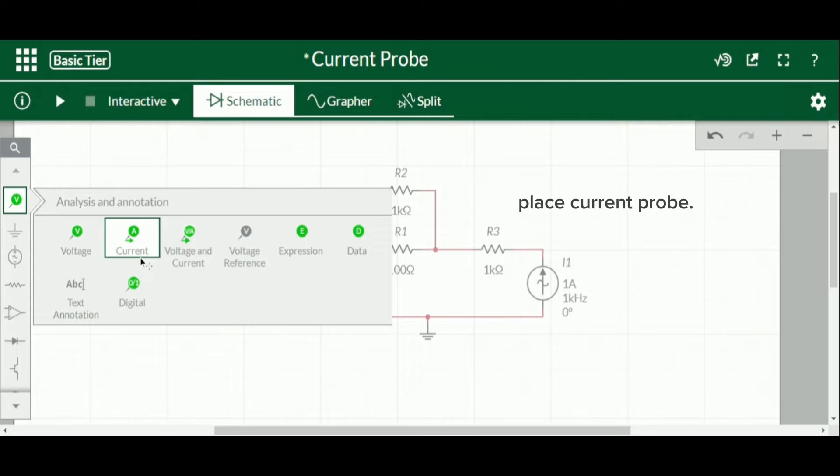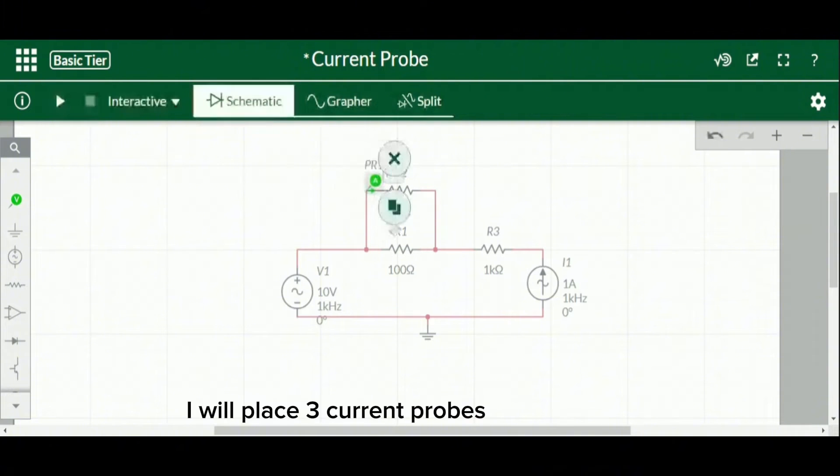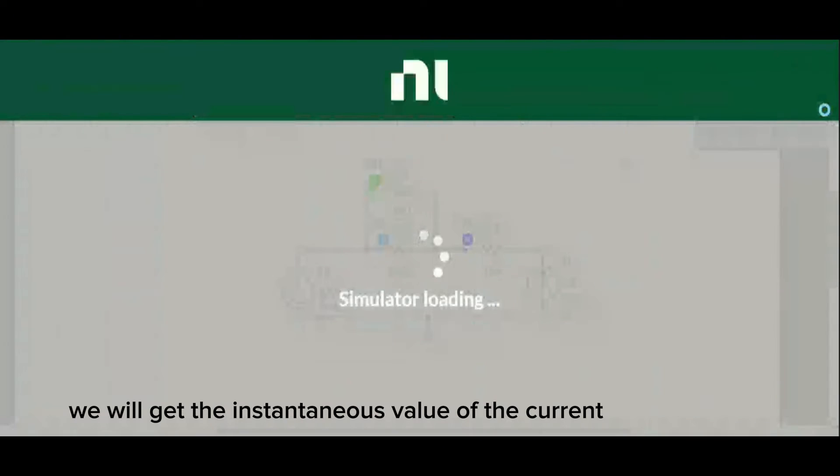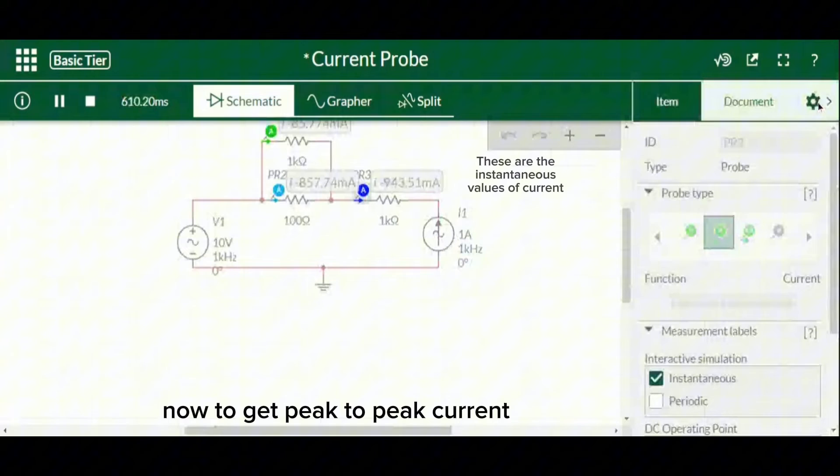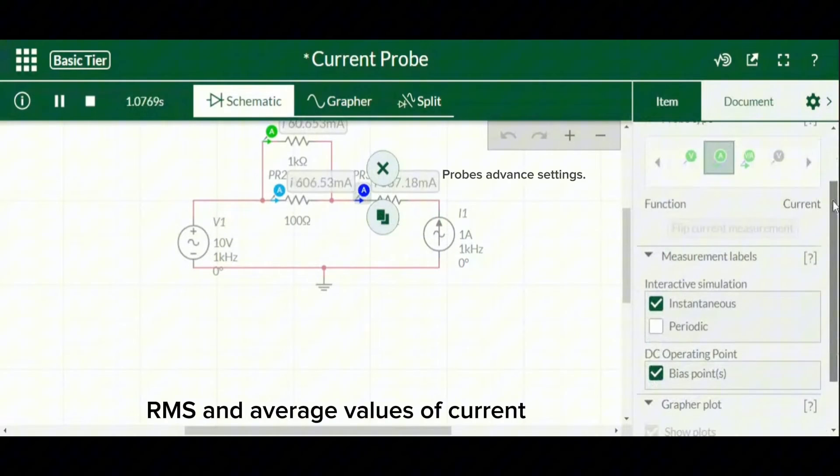So let's begin with the current probe. I will place three current probes, one for each resistor. Let's simulate the circuit. We will get the instantaneous value of the current. Now, to get peak-to-peak current, RMS, and average values of current, check this periodic.